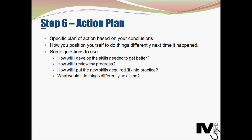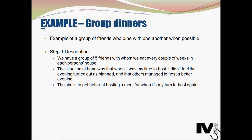Now let's look at a simple example: group dinners between a group of friends. It's a group of five friends who eat at a different person's house every couple of weekends, with one person hosting each time. In the description stage, we describe what happened: when it was my turn to host, I didn't feel the evening turned out as planned, and the others managed to host a better evening when it was their turn. The aim was to get better at hosting for next time. We observe and document everything objectively without passing judgment.